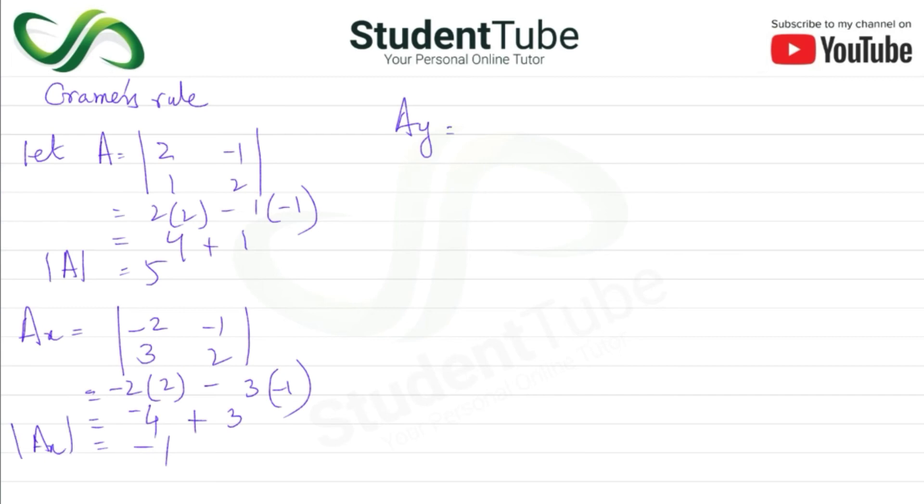For Ay, we have A and c: [2, -2; 1, 3]. 2 times 3 minus 1 times -2: 6 minus minus plus 2 equals 8.